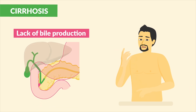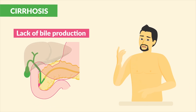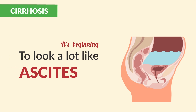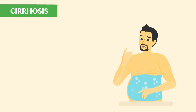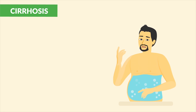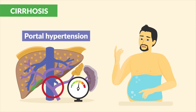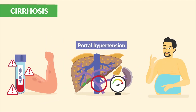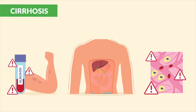Due to lack of bile production. It's beginning to look a lot like ascites — fluid in the abdomen from the portal hypertension, the lack of albumin, increased capillary pressure causing third spacing.